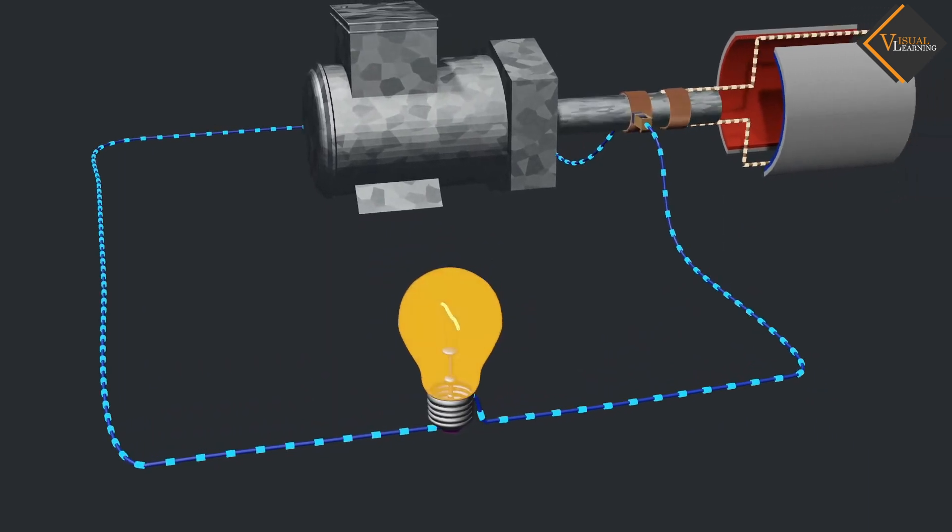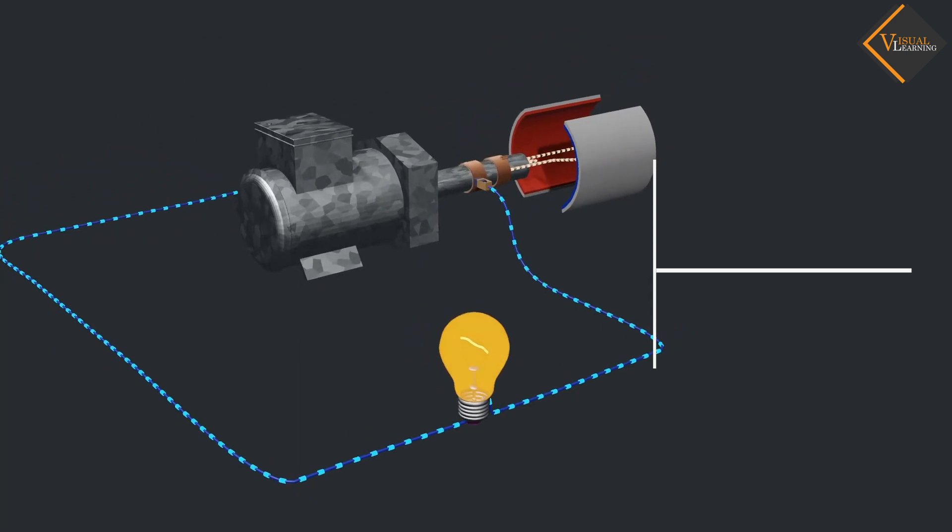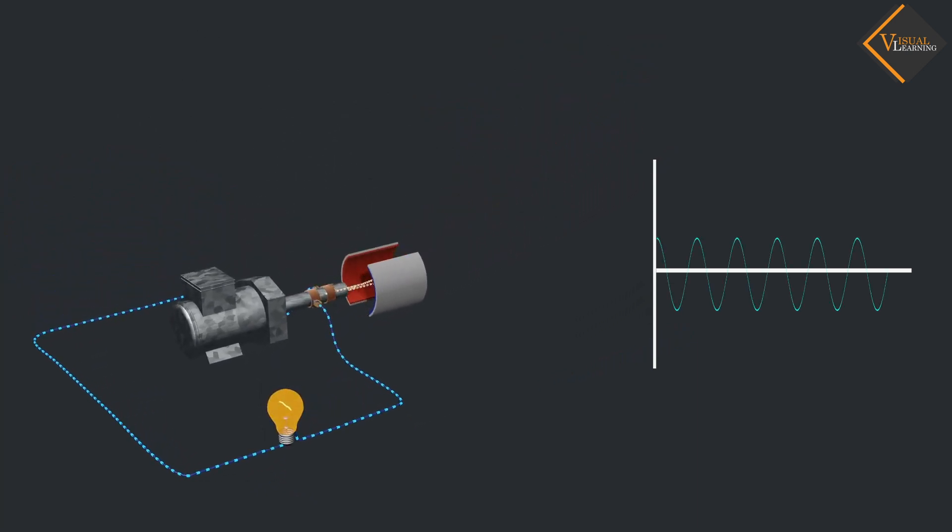If we represent the flow of current through a graph, we get a wave pattern. When the current starts flowing in the wire, its value is zero initially. It reaches its maximum value after a certain time interval, which we call the time period. We denote it as T. As soon as the current direction changes, the current value decreases and becomes zero again.